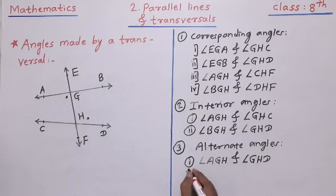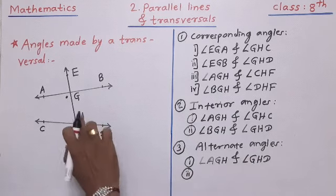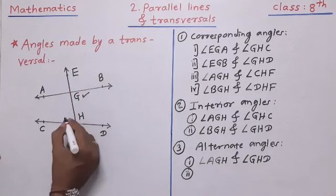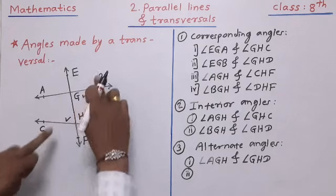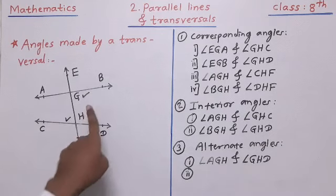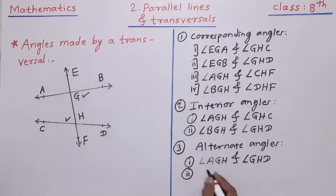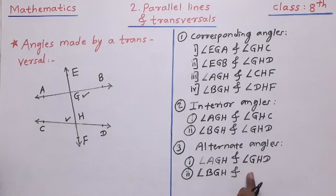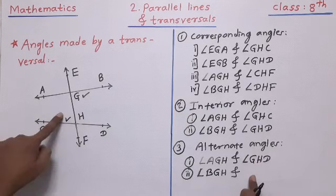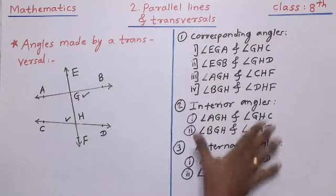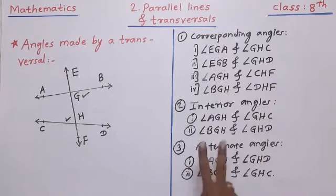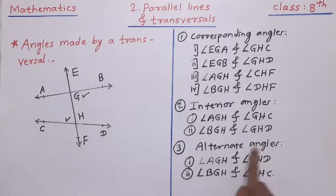The second pair of alternate angles: if we take angle BGH, then its alternate angle is here — both angles are inside the two lines but on the opposite side of the transversal. This angle is angle BGH and its alternate angle pair is angle GHC. In this way we get a total of eight pairs of angles: four pairs of corresponding angles, two pairs of interior angles, and two pairs of alternate angles. You have to remember this as questions may be asked in the examination.